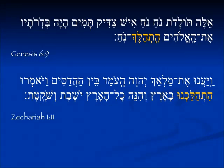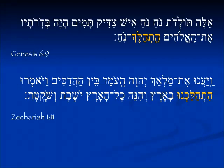In Genesis 6:9, a verse you know, speaking of Noah: 'These are the generations of Noah. Noah ish tzaddik' — Noah was a righteous man. 'Tamim haya b'dorotav' — he was perfect or complete in his generations. 'Et ha-elohim' — this 'et' is not a direct object marker, it's the preposition 'with.' There are two forms for 'with': et and im. 'Hithalech Noach' — Noah walked with Elohim. This is a segol instead of a tzere — try not to have a meltdown about it. In Zechariah 1:11, speaking of the horses and riders sent out to look throughout the earth, they replied to the Lord's messenger: 'Hithalchnu ba-aretz' — we have walked through the earth.